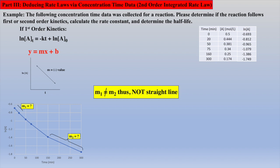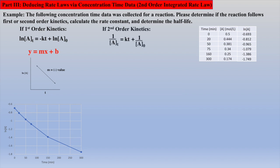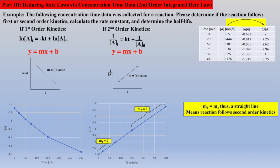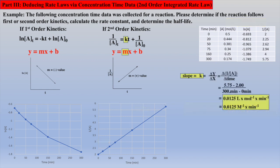Now we should check to see if this reaction follows second-order kinetics, where a plot of 1 over A concentrations versus time will be a straight line. To do this, we create another column of data, 1 over concentration of A, and plot it against time. With this plot, we do get a straight line. Calculating the slope of this line gives the rate constant k, which is accomplished using the first and last data points to yield 0.0125 liters per mole seconds.